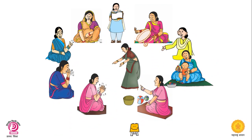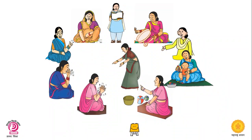As soon as the sound of the spoon stops, the mother who has the bowl in her hand should pick out a chip from the bowl. The mother should not call out the animal name written on the chip, but should describe its characteristics. The task of the other mothers is to identify the names of the animals.